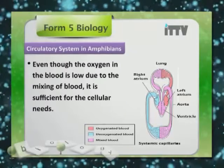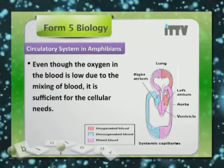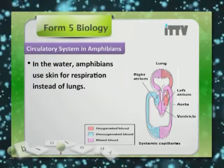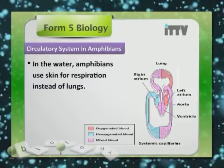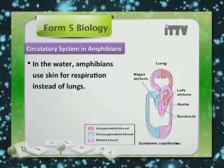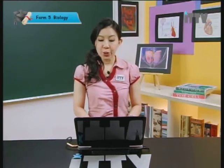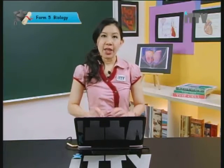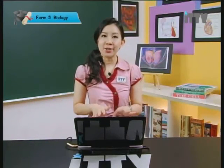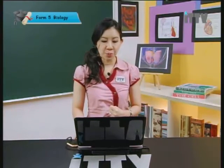Even though in the amphibian circulatory system the oxygen in the blood is low due to the mixing of blood, it is sufficient for the cellular needs. In the water, amphibians use their skin for respiration instead of lungs. The composition of oxygen in the blood in the ventricles, which is pumped to the different parts of the body, is sufficient to meet the needs of the amphibian tissues.